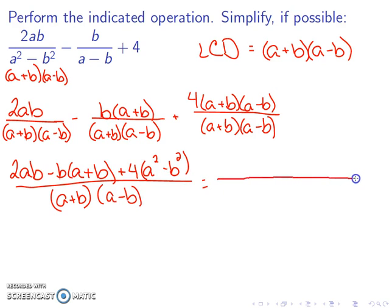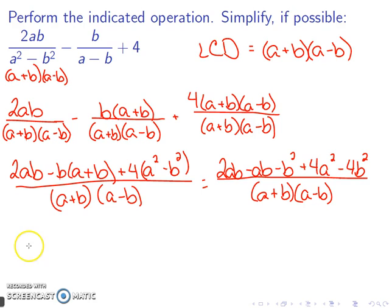In order to simplify the numerator, we're going to want to multiply this out. So 2ab minus ab minus b squared plus 4a squared minus 4b squared over (a + b)(a - b). Simplifying this, I get 4a squared plus ab minus 5b squared.